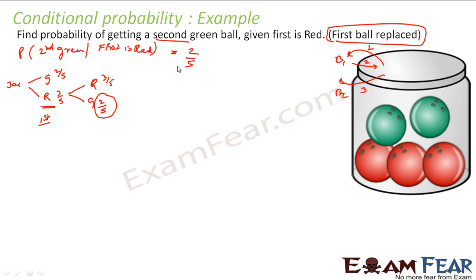Using the diagram: I had the jar with green and red balls. Since the first ball was replaced, I again have 5 balls in the jar. Given that the first is red, it doesn't matter here because the ball is replaced — the conditional probability doesn't matter. You are starting fresh, taking out a new ball, so the probability of getting a second green ball is 2 by 5. Even from fresh, the probability of green is 2 by 5.